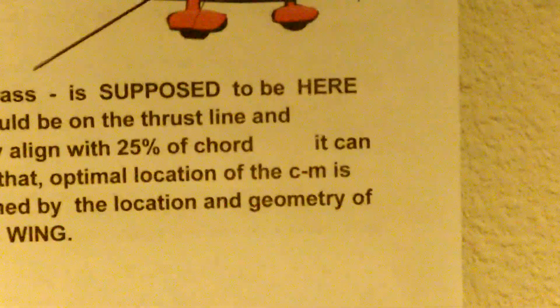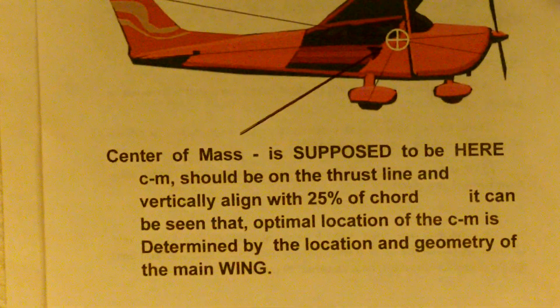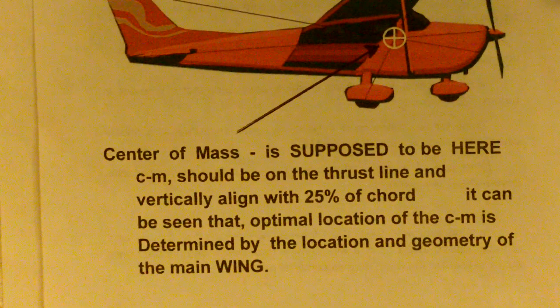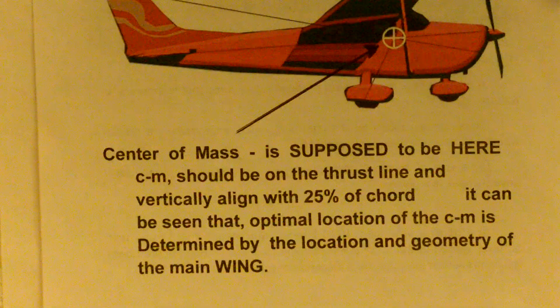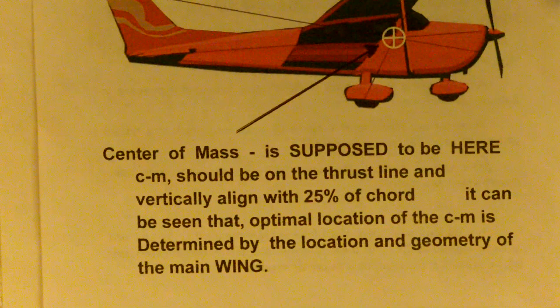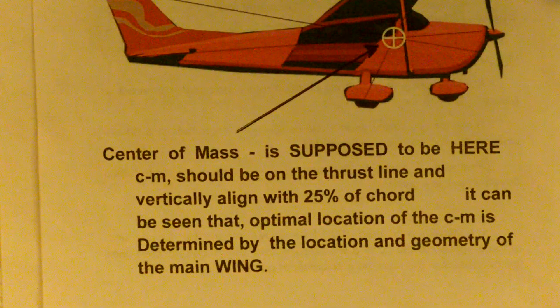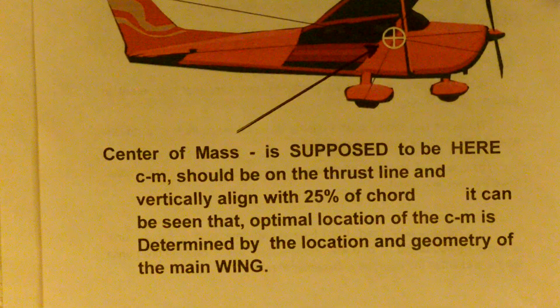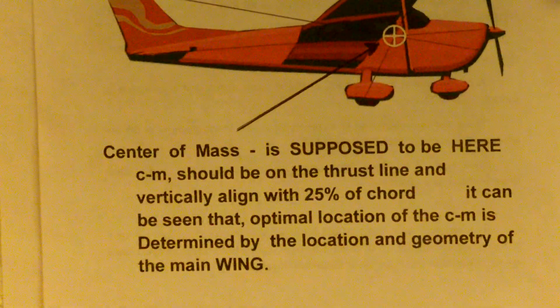Here we have an illustration that I've linked to several times over the years, and it says what you all need to understand about center of mass. It's separate from center of gravity, and if it's not addressed deliberately, the problem is permanent — it never goes away. The text says what you should understand about the location of CM.